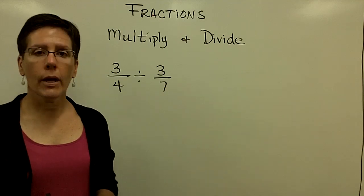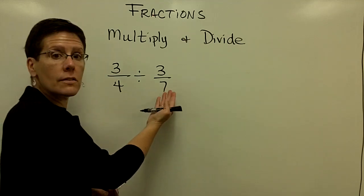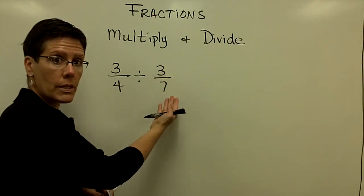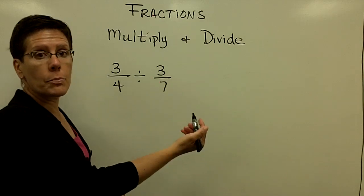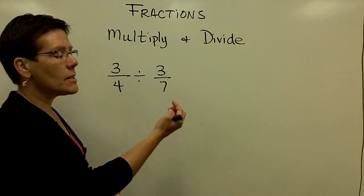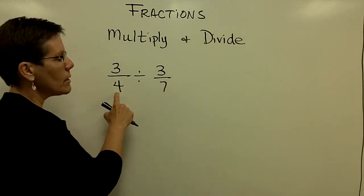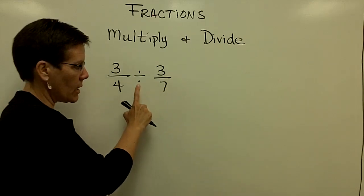When you divide with fractions, you have to invert the second fraction, the three sevenths. You have to flip it and call it seven thirds, and then follow the process of multiplication. Some people say skip, flip, and multiply.